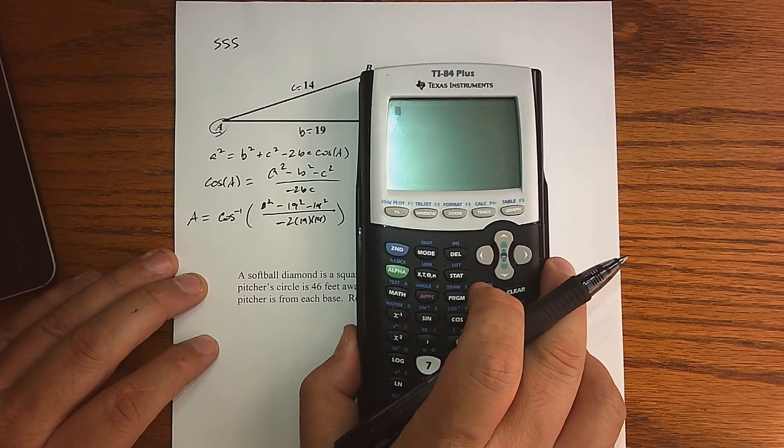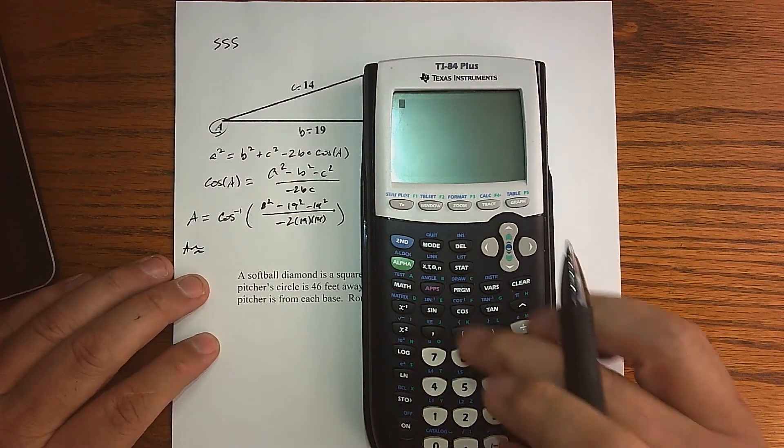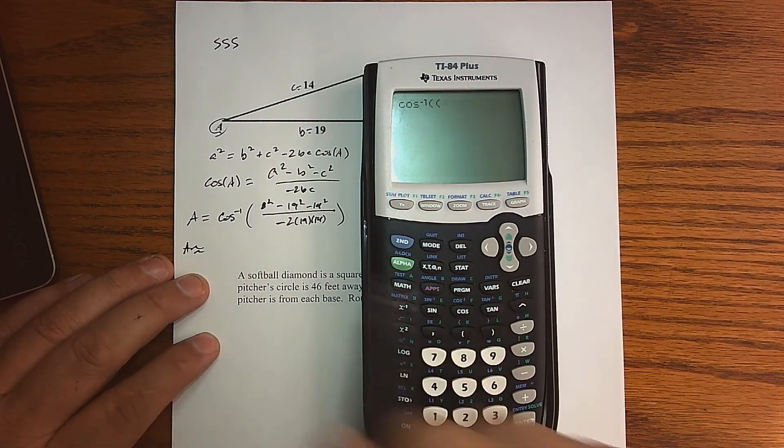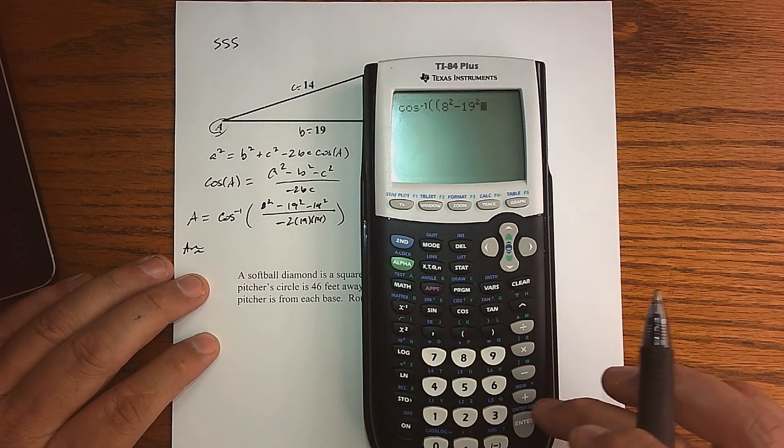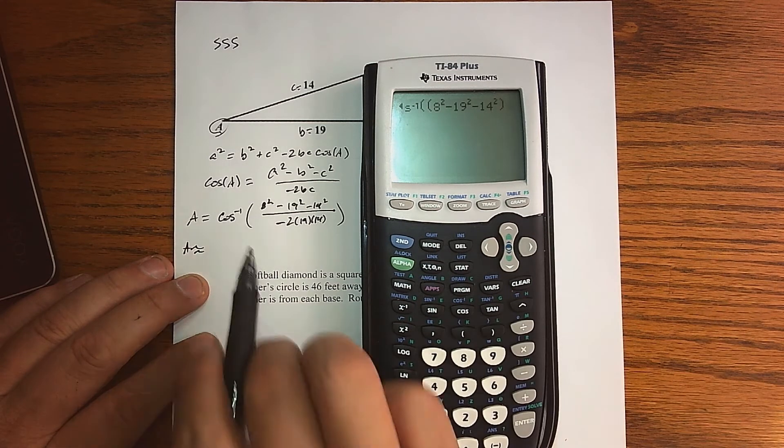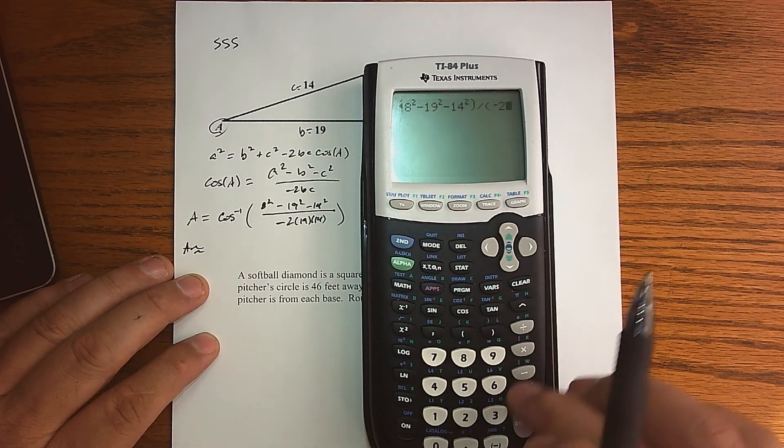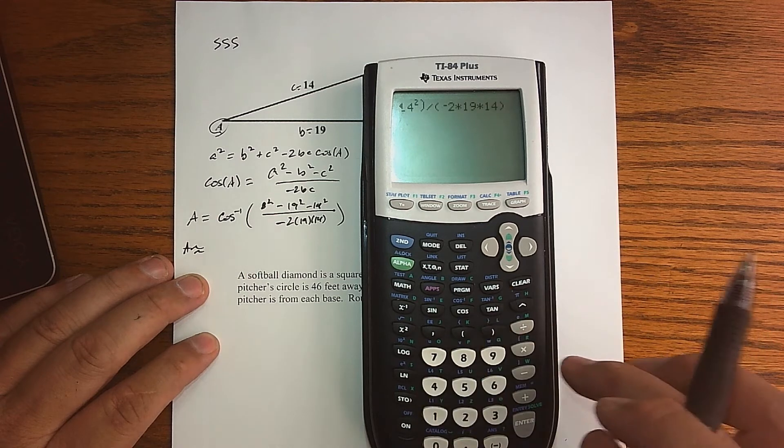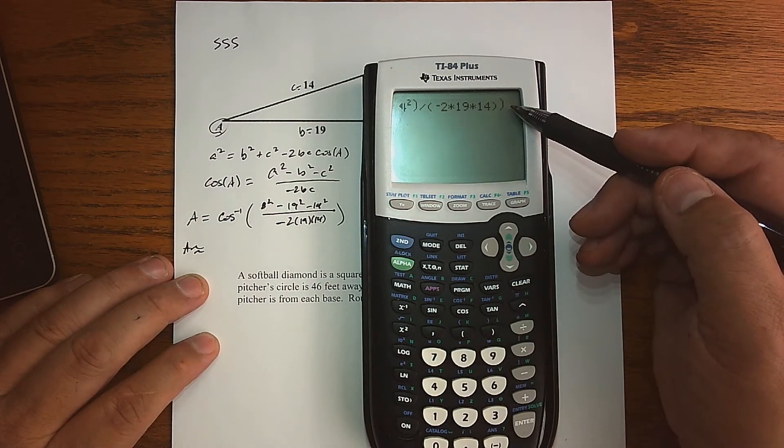And so now we just punch that in our calculator. So what do we get for A is roughly, let's see, inverse cosine, use a couple parentheses here, one for the cosine and one for the numerator. So A, 8 squared minus 19 squared minus 14 squared, close that parentheses because that ends the numerator, divide by, well, the denominator, open another set of parentheses, negative 2 times 19 times 14. And then close that, and then close that off to do the denominator, and then close it off to close up that cosine inverse.